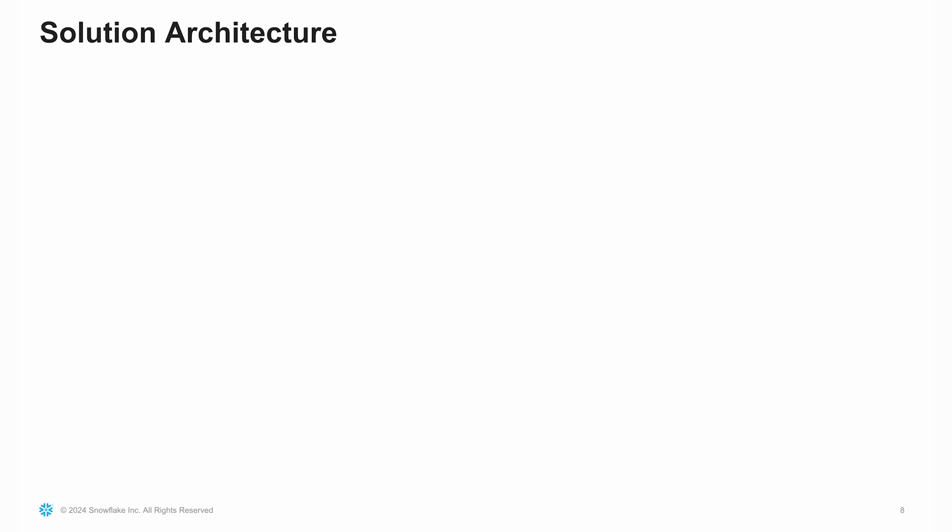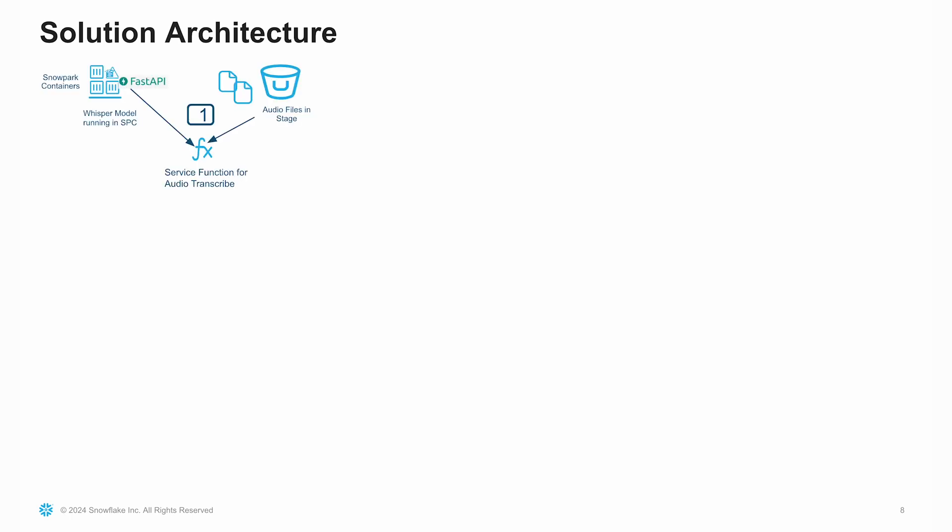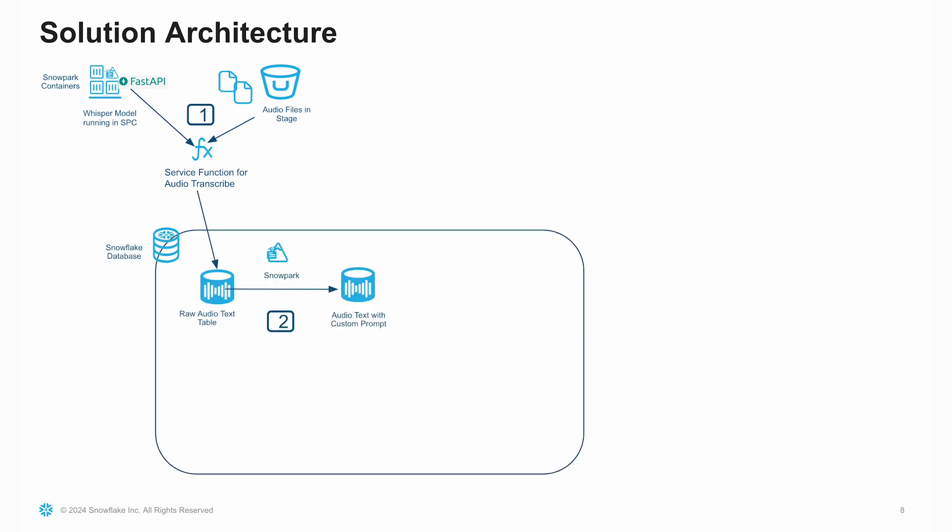Now let's look into the solution architecture. As a first step, we extract the text from the audio file using the Whisper model, which is running inside Snowpark container services. Once we extract the text as well as the duration from the audio file, we load that information inside Snowflake tables. Now with the help of Snowpark, we add a custom prompt to the audio text.